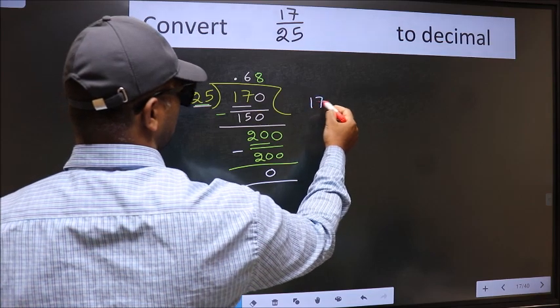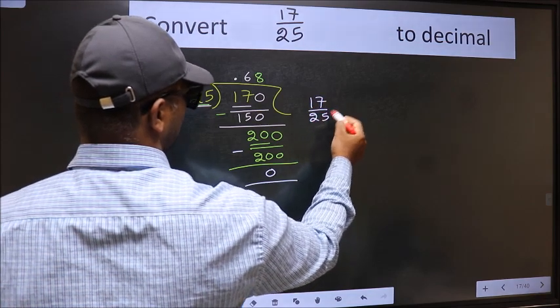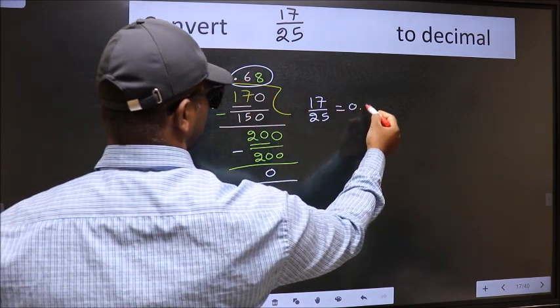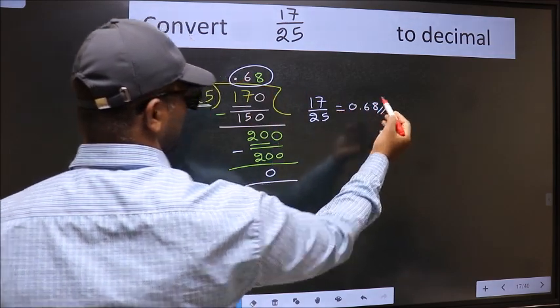Therefore, the decimal of 17/25 is 0.68. This is our answer.